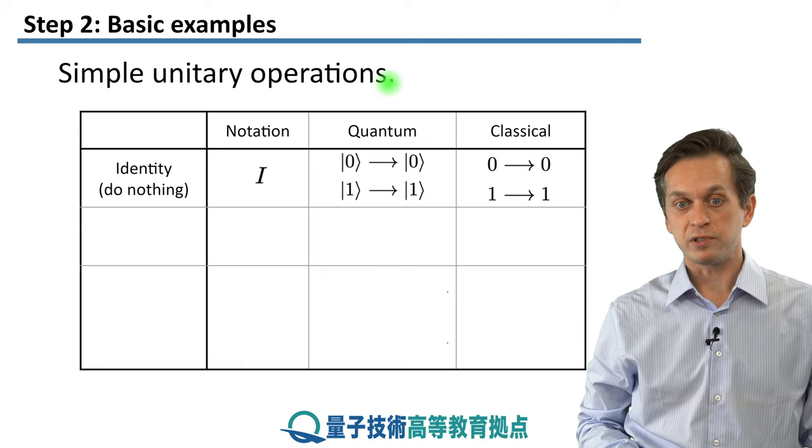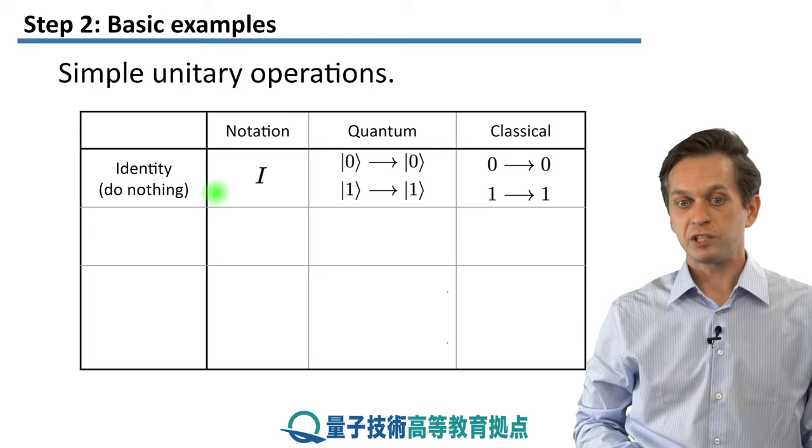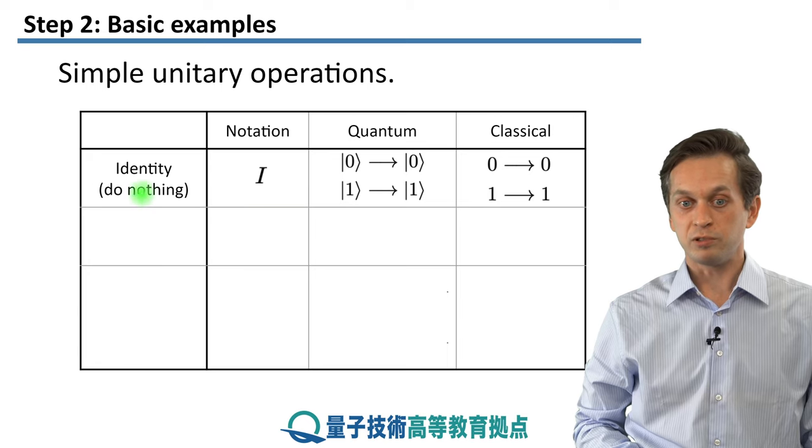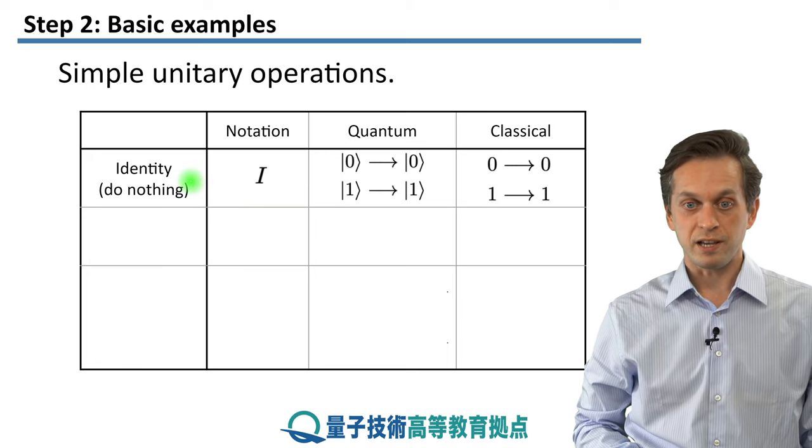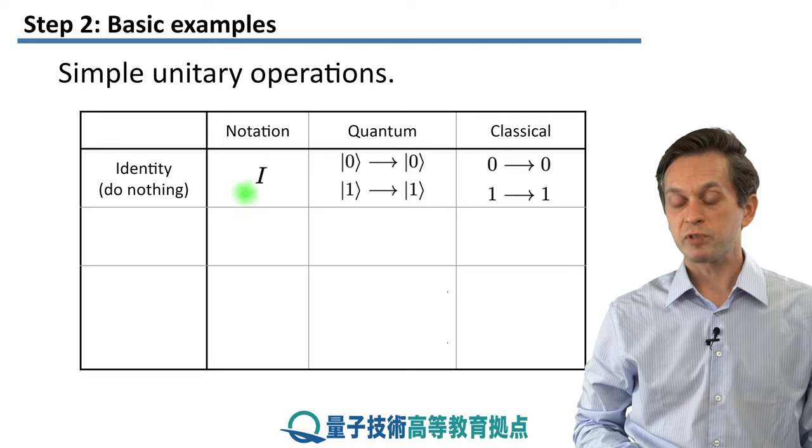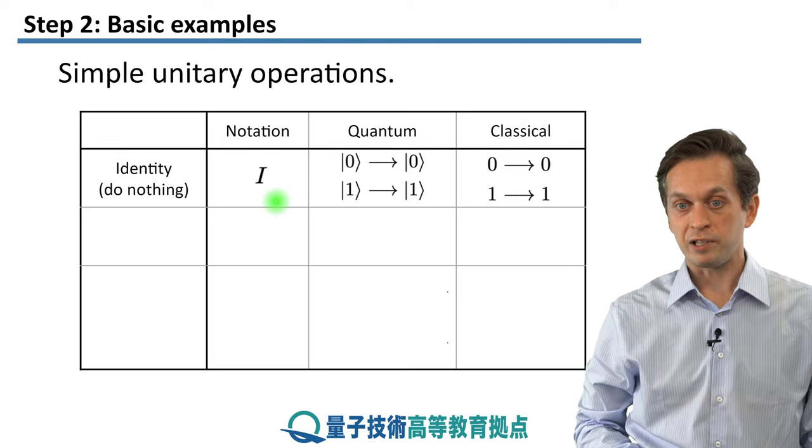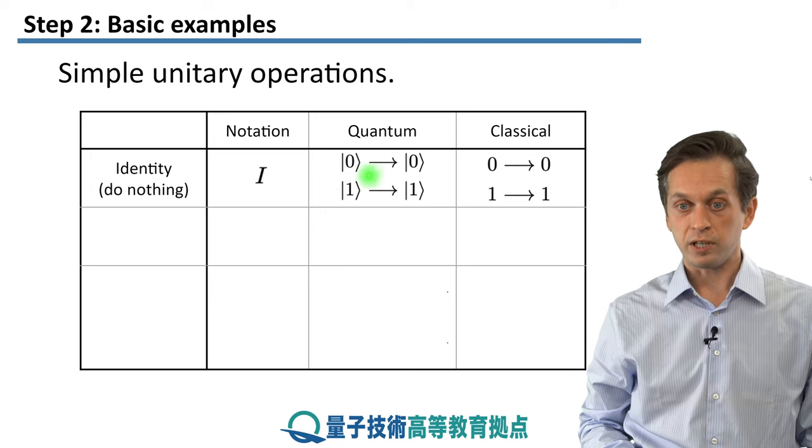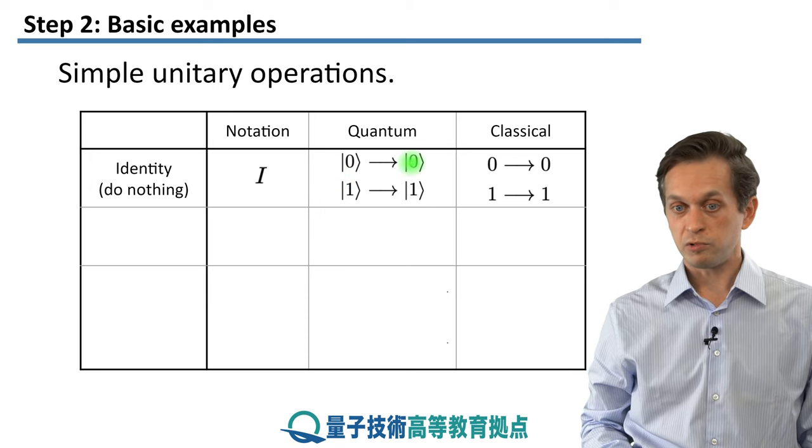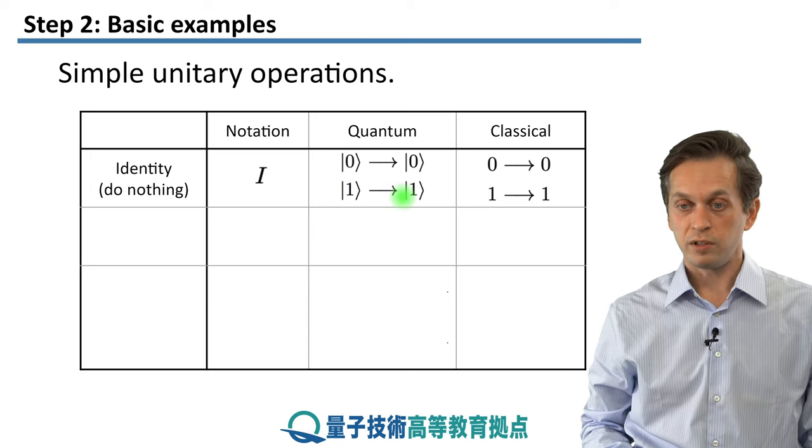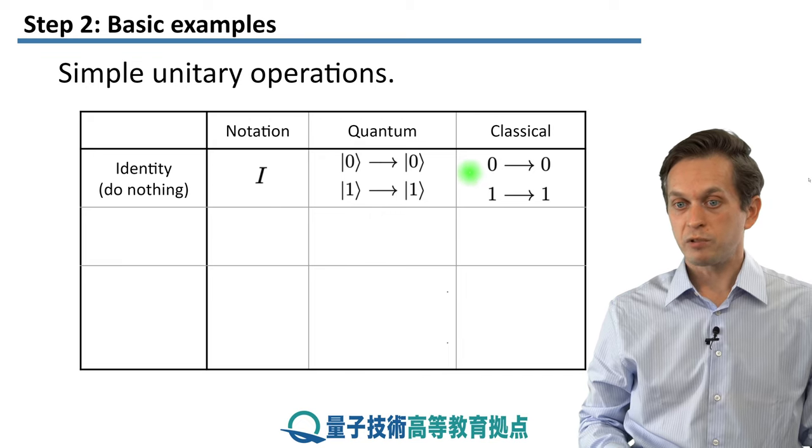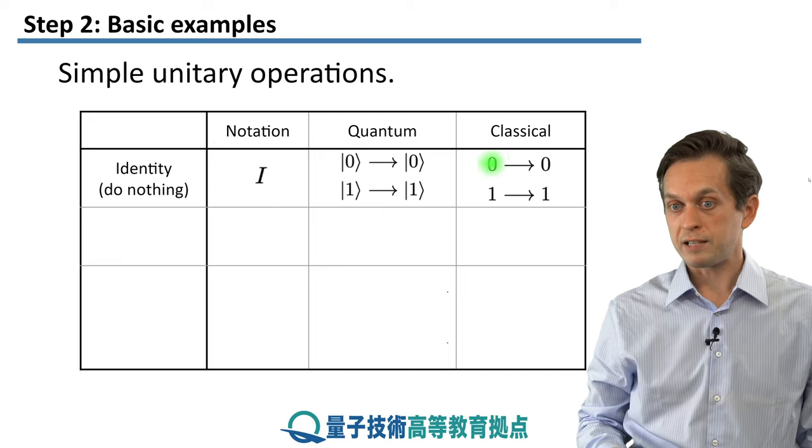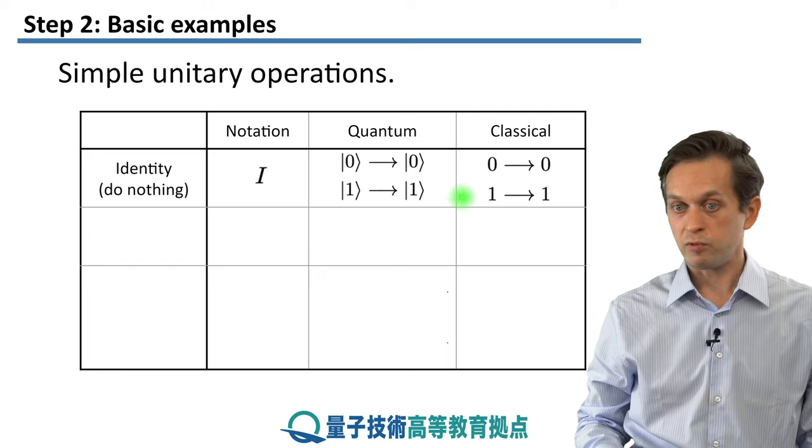Before we do that, let's look at some examples. The most simple transformation that we can think of is actually to do nothing, and we call this the identity operation, usually represented by a capital I. So when it's acting on a ket, it takes ket 0 to 0 and ket 1 to 1. Classically, we can also do something similar by just not touching our classical bit.